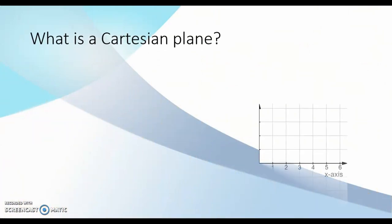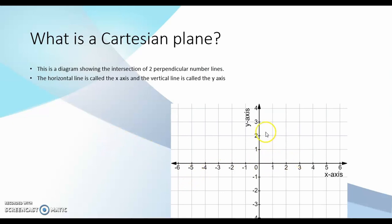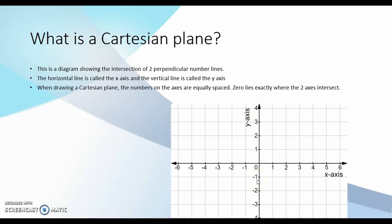What is a Cartesian plane? This is a diagram showing the intersection of two perpendicular number lines. The horizontal line is called the x-axis and the vertical line is called the y-axis. When drawing a Cartesian plane, the numbers on the axes are equally spaced. Zero lies exactly where the two axes intersect.